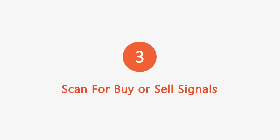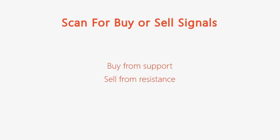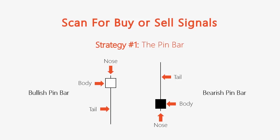At this point you should have identified your key levels and evaluated momentum. Now we want to start looking for buy or sell signals. It's really important here that you scan for signals and not search for them. That may sound like the same thing, but if you search for signals, chances are you're going to find something — but that doesn't mean it's worth taking. Whereas if you're scanning, it's more casual, where you're looking for the very best signals. When trading the market, we want to buy from support and sell from resistance. One of the key signals I look for is the pin bar — a pattern I started using about seven years ago and still use today.